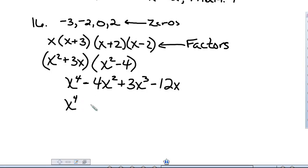You may want to rearrange your terms so that they are descending. So we have x to the fourth plus three x cubed minus, excuse me, plus four x squared minus twelve x. And that is the answer to question number 16. And that concludes this video.